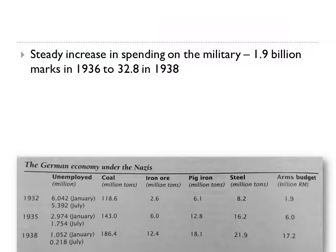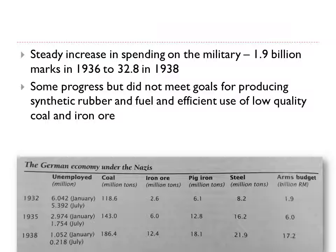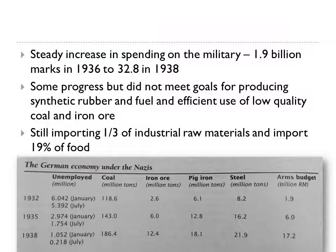There was steady spending on the military: from 1.9 billion marks in 1936 to 32.8 billion marks in 1938. Unemployment also fell dramatically — from 6 million unemployed in 1932 to just 200,000 by the second half of 1938. However, there was some shortfall: Germany did not meet its goals for producing synthetic rubber and synthetic fuel, or for efficient use of low-quality coal and iron ore. By the eve of war, Germany was still importing a third of her industrial raw materials and 19% of food, making her quite vulnerable.